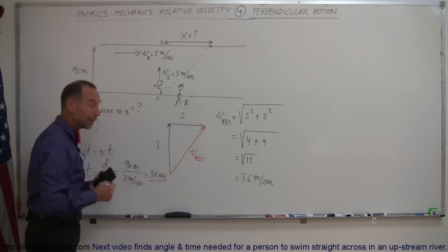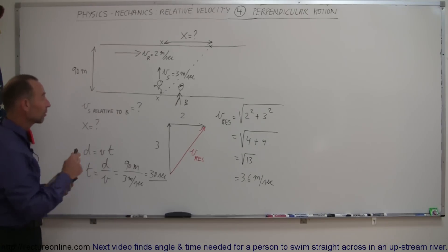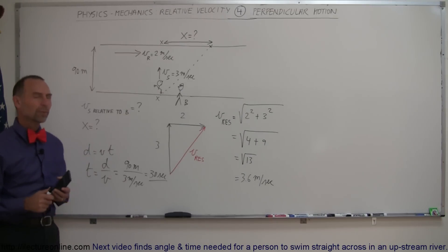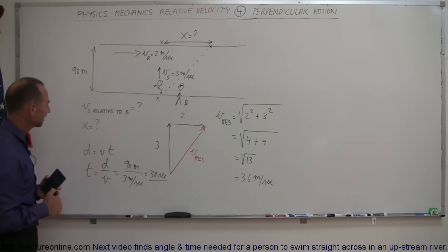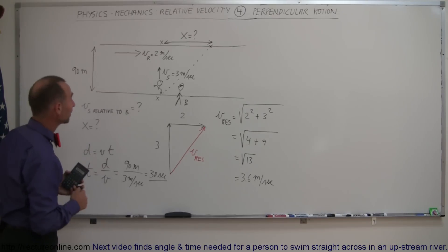So the swimmer will be in the water for 30 seconds, will be on the other side of the river. Well, that's quite a swimmer, 90 meters in 30 seconds. Wow, you better sign this person up for the Olympic team.